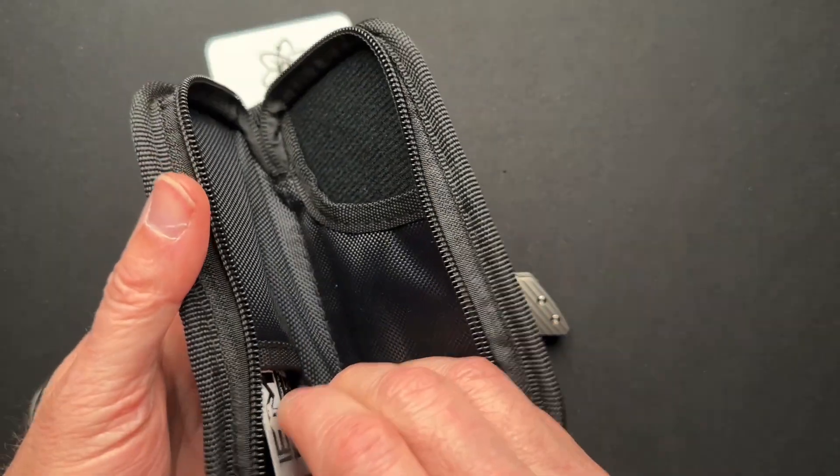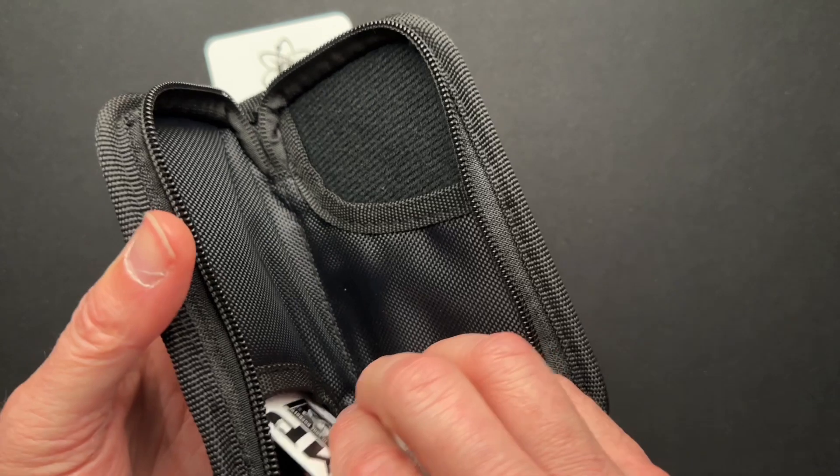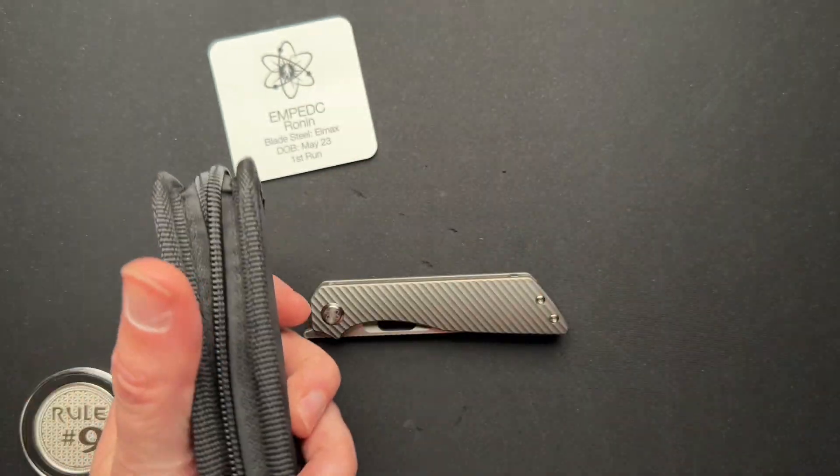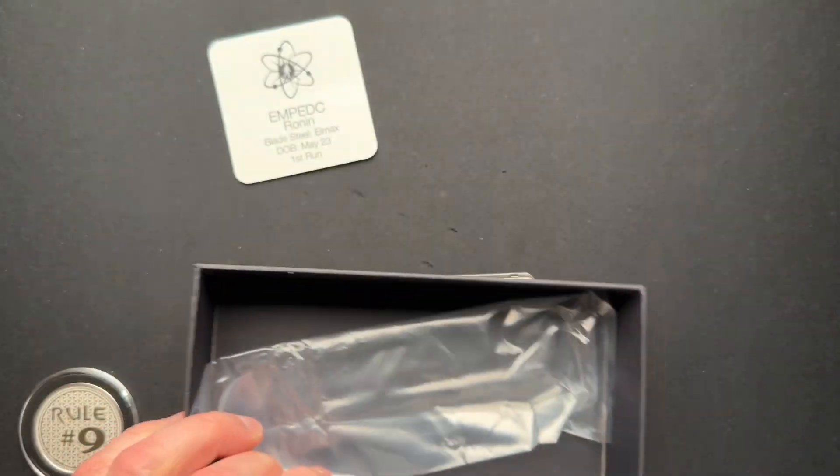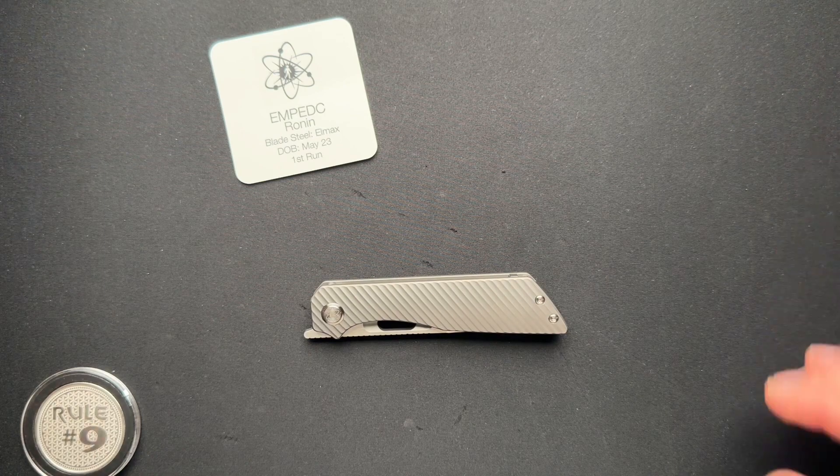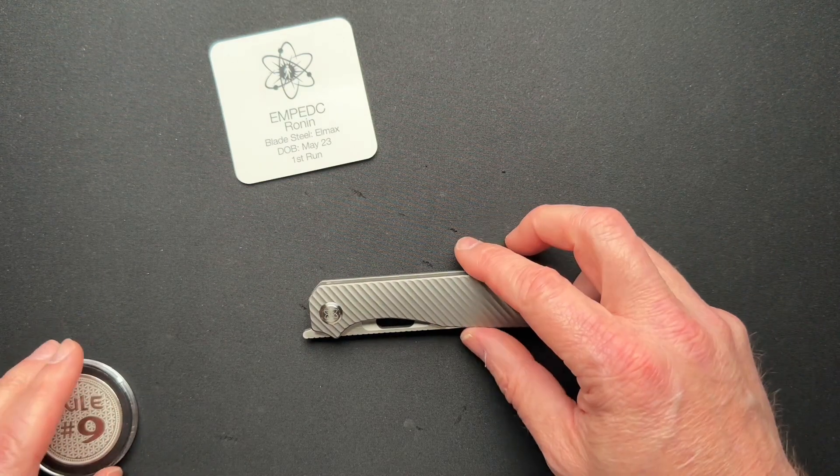You get the knife inside, you get some stickers and the certificate of authenticity over here, as well as a cardboard box and a little plastic baggie if you're into that stuff. So let's talk about it.